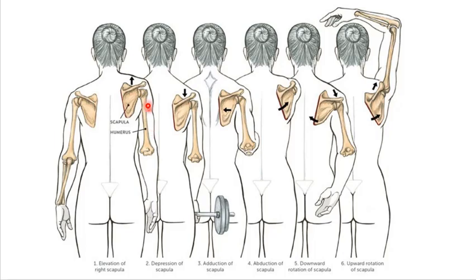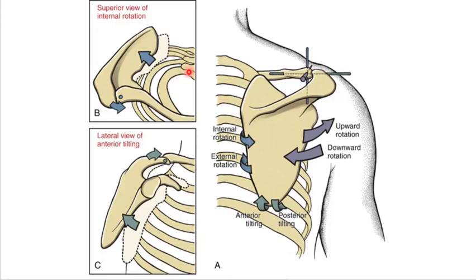All of this movement of the scapulothoracic joint is actually happening at the AC and SC joints, as discussed in the last lecture. The axis of rotation is actually there, not here, but it's hard to see what's happening at the clavicle or the spine of the scapula. So we describe that movement based on what we're seeing happen at the scapula.